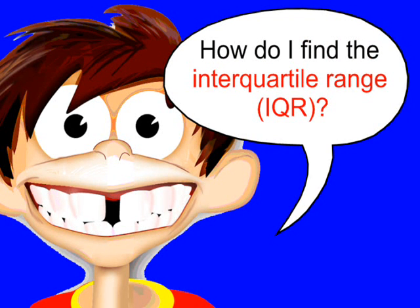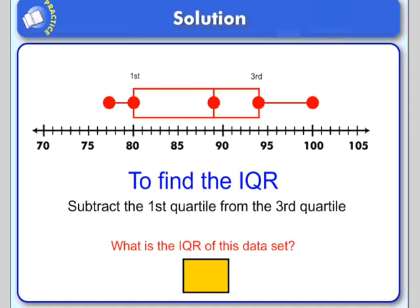So how do I find the interquartile range? It's actually really easy. Now here's a box plot, and we learned how to make these in another video. Just remember that the box in a box plot represents the middle 50% of your data. And the interquartile range is the range of that middle 50%. So how far is it from here to here? What is the range?